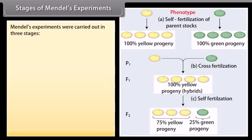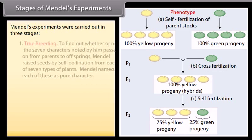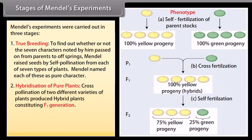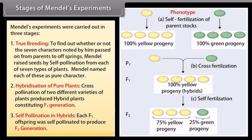Stages of Mendel's experiments. Mendel's experiments were carried out in three stages. First, true breeding — to find out whether the seven characters passed on from parents to offspring, Mendel raised seeds by self-pollination from each of seven types of plants, naming each a pure character. Second, hybridization of pure plants — cross-pollination of two different varieties produced hybrid plants, constituting the F1 generation. Third, self-pollination in hybrids — each F1 offspring was self-pollinated to produce the F2 generation.